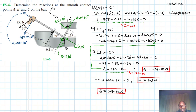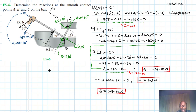So A has the largest value at 577.38 N, followed by C at 433 N, and then B at 327.38 N. I hope the video was helpful. If it was, give me a thumbs up, like the video, and continue subscribing to my channel. Bye bye and see you in my next screencast.